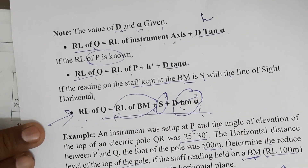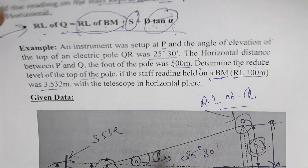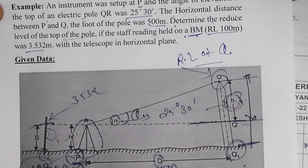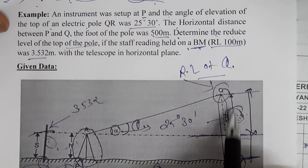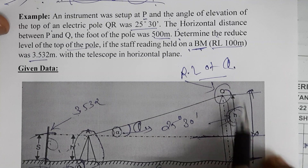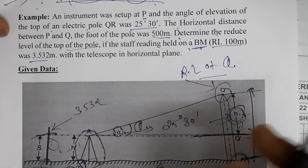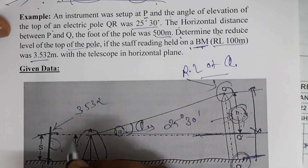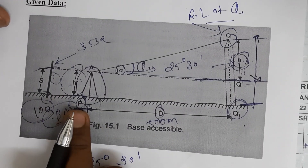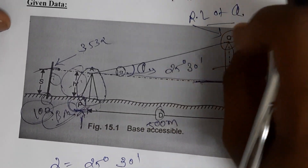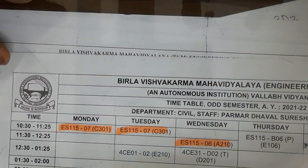First we need to find the H value using D·tan(θ). We are in a position to find the height between Q and Q-dash from the instrument axis. After that we add the RL of the benchmark, and then we can find the RL of Q.